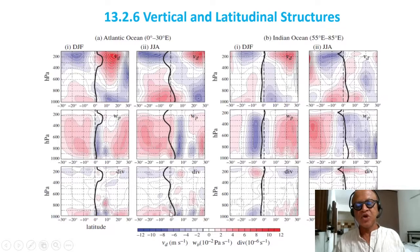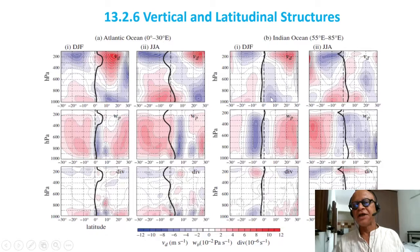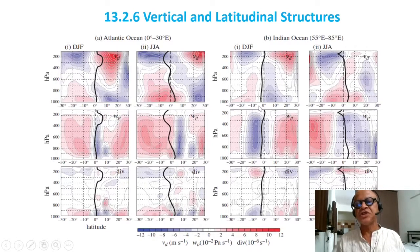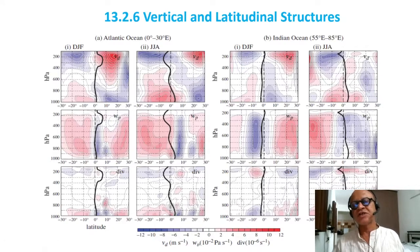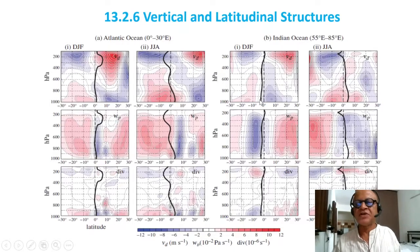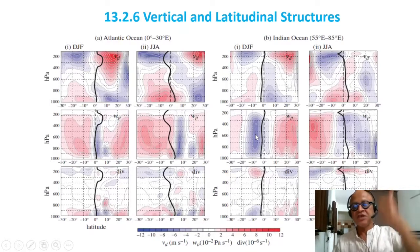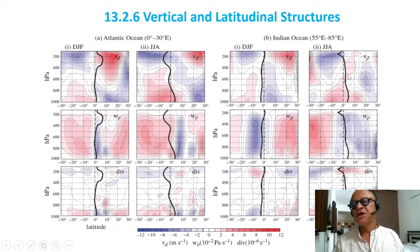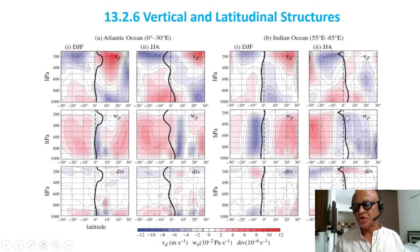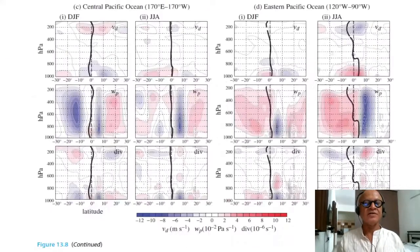Indian Ocean is a complicated story. In DJF there is northeasterly monsoon, ITCZ is to the south, so you have cross-equatorial η=0 line in the southern hemisphere. Vertical velocities here negative because p decreases, and you have the divergence field. In the summer months you have the maximum convection happening basically over land, but this is averaged over parts of Bay of Bengal and Arabian Sea.